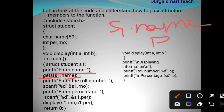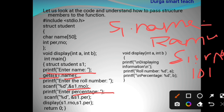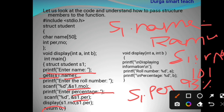For example, the user enters 'Ramu', so s1.name stores 'Ramu'. Next, enter the roll number — that is stored in s1.rnumber, for example 101. Next, enter the percentage — that is stored in s1.percentage, for example 93. Then we call display(s1.rnumber, s1.percentage). The function has two arguments a and b, so we are passing those structure members as parameters.